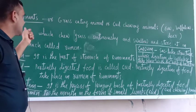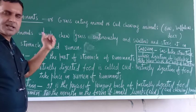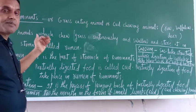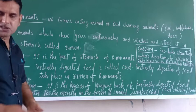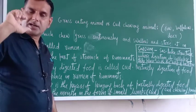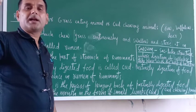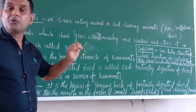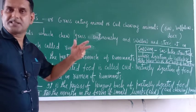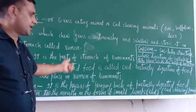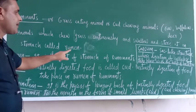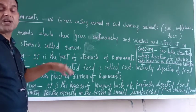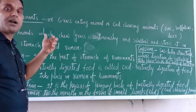What is the definition of ruminants? These are the animals which chew the grass continuously, swallow it, and store it in a part of the stomach called the rumen. Their stomach is divided into four parts: rumen, reticulum, omasum, and abomasum. The rumen is the part of the stomach of ruminants.